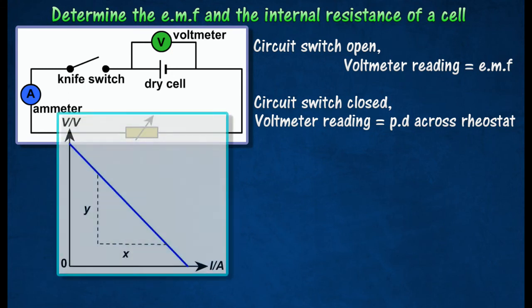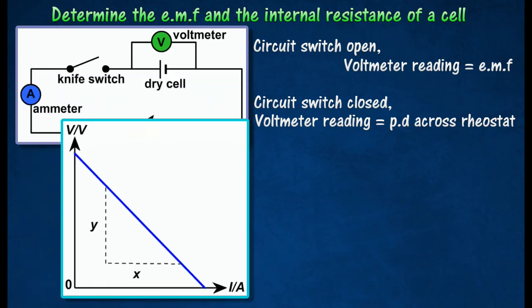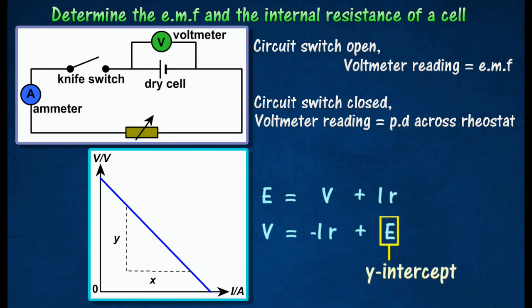The internal resistance of the cell can be determined from the graph of voltage against current. From the equation E equals V plus IR, the gradient or slope of the graph represents the internal resistance R, while the intercept on the y-axis represents the electromotive force E.